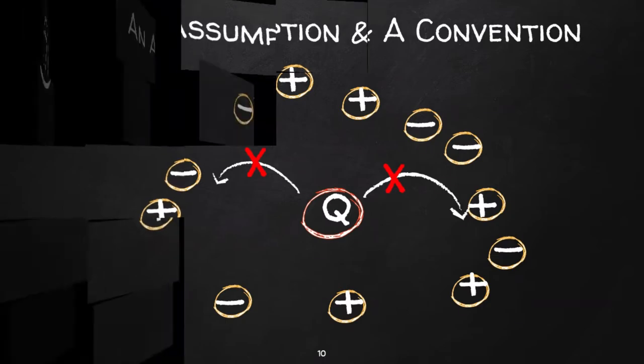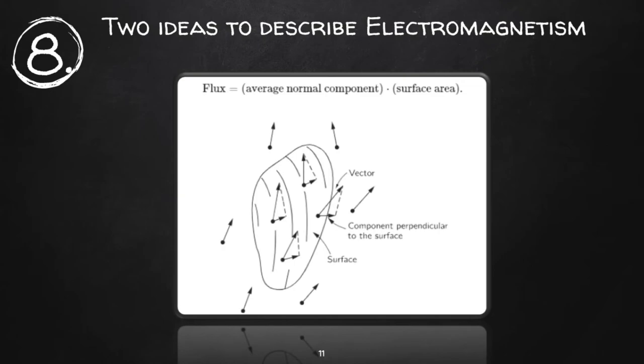The next concept is flux of a vector field, defined as the average normal component of the field times the surface area. Circulation of a vector field is the average tangential component of the field times the distance around. With these two ideas, we can describe electricity and magnetism at once.